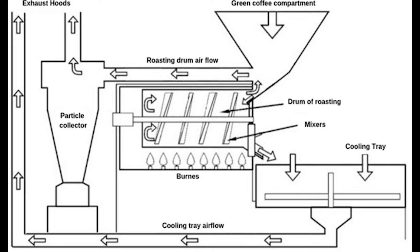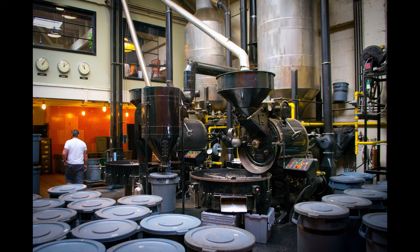The drum is heated by gas, electricity or wood, and the beans are roasted as they come into contact with the hot drum. Drum roasters produce consistent roasting and have the ability to handle large batches. They are generally considered to be easy to use, making them a great option for beginners or those without a lot of experience roasting coffee.